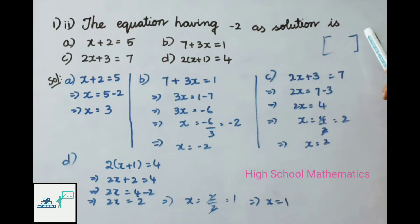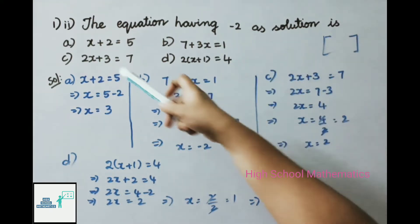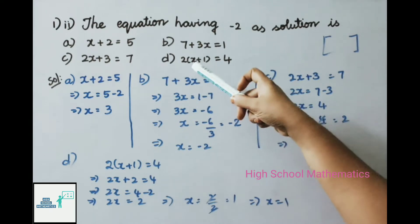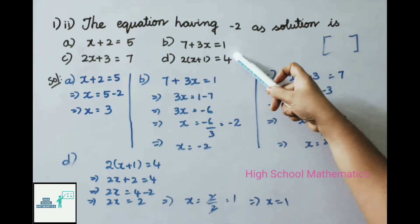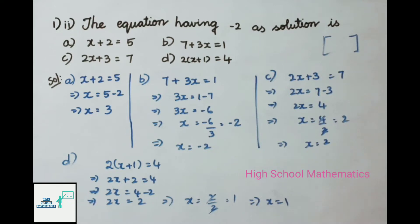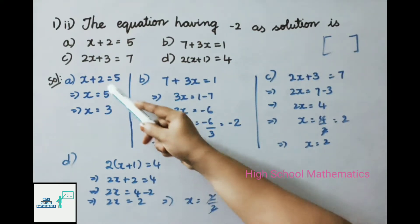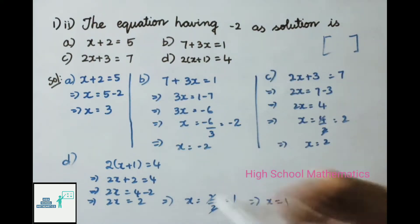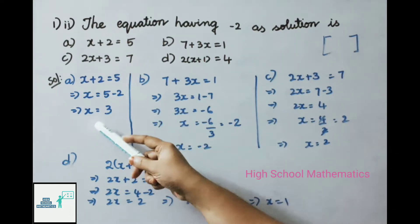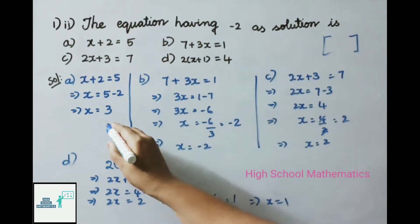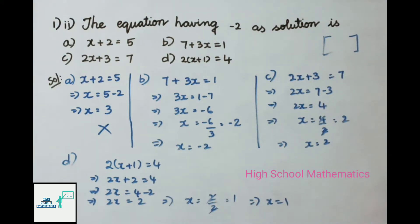Second question: the equation having -2 as solution. Options: A) x + 2 = 5, B) 7 + 3x = 1, C) 2x + 3 = 7, D) 2(x + 1) = 4. Let us solve all four equations. First equation: x + 2 = 5. Transposing: x = 5 - 2 = 3, which is not equal to -2, so it is not the solution.